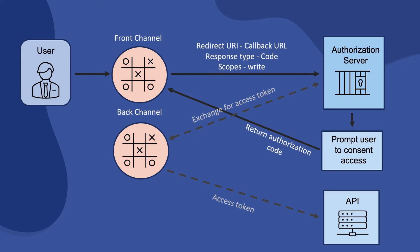If you're wondering why we get an authorization code and then exchange it for an access token — the short answer is security. The browser can't be fully trusted, so we don't want to expose an access token in the browser unless you're sure that not much harm can come from it being stolen. Even if an authorization code is stolen, an attacker can't directly use it to exchange for an access token, because the back channel will also pass a secret that only the authorization server and back channel know about during the exchange. This is how OAuth allows applications to integrate with APIs securely while allowing granular access to resources.